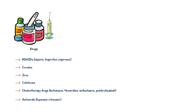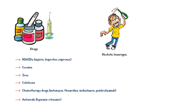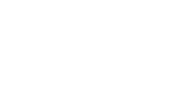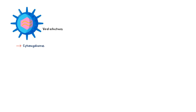Ritonavir can also cause acute gastritis. Another important cause of acute gastritis is consumption of alcoholic beverages such as whiskey, vodka, and gin. Bacterial infection with Helicobacter pylori is the commonest cause of gastritis worldwide. Very rarely, bacteria such as streptococci, staphylococci, and Proteus can also cause gastritis. Another cause of acute gastritis is viral infection, especially with cytomegalovirus.